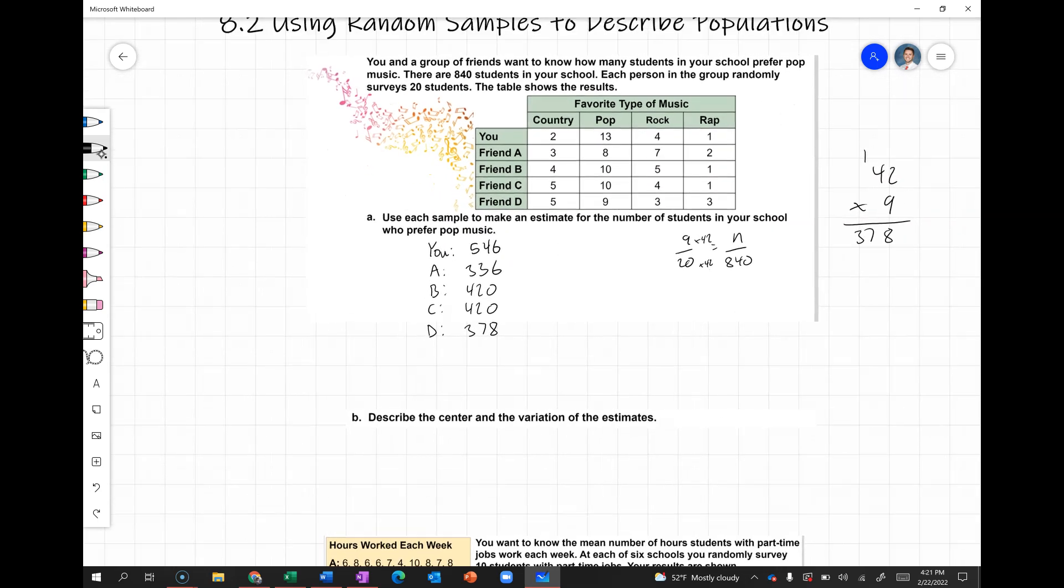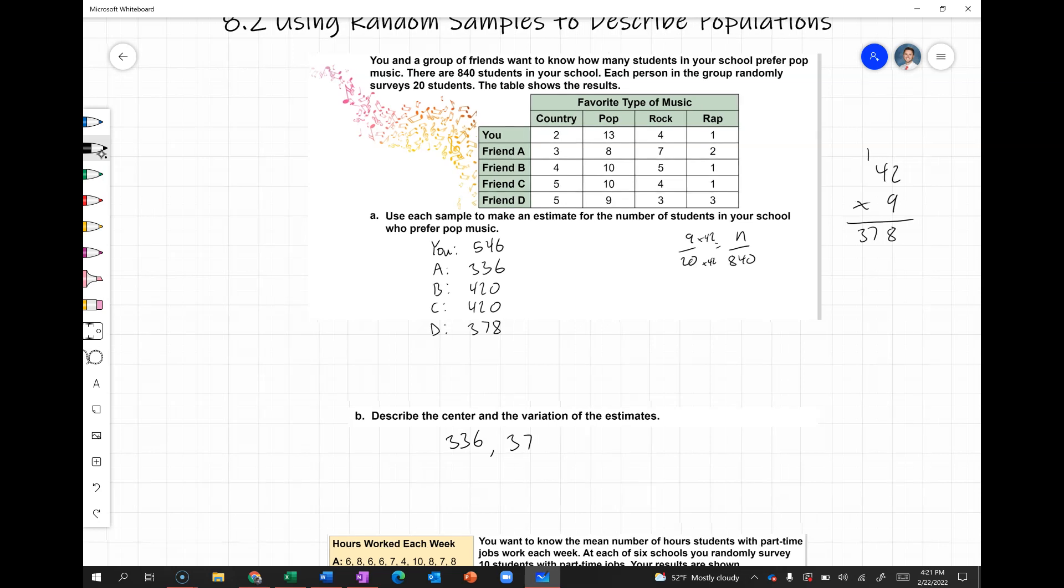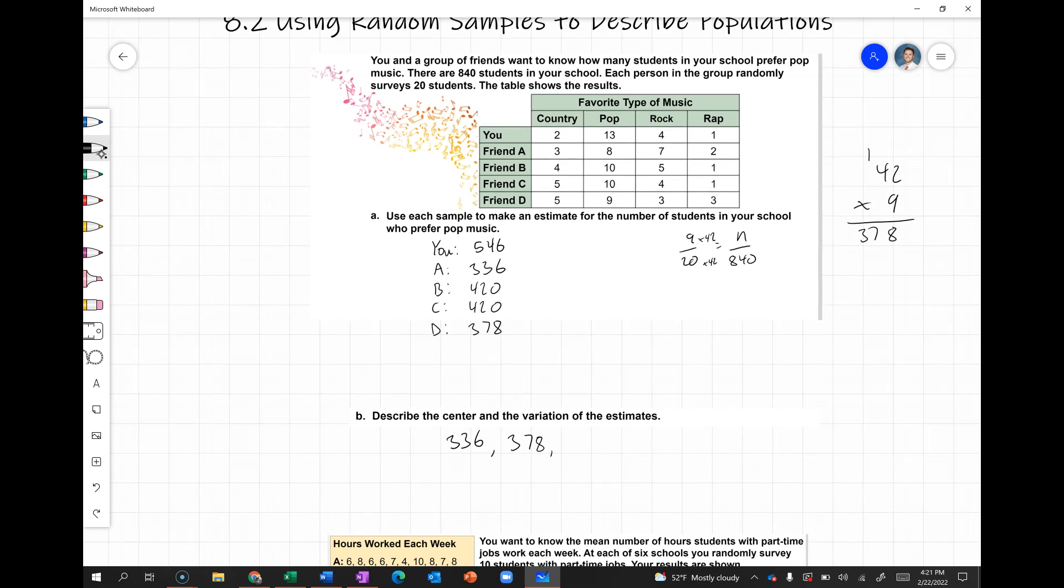So the median, if we write these from least to greatest: 336 people, 378 people, 420 people, another 420, and 546. If we were finding the median, that would be 420 people. So we could go with that as our median number of people at the school who like pop music, which is exactly half of them.